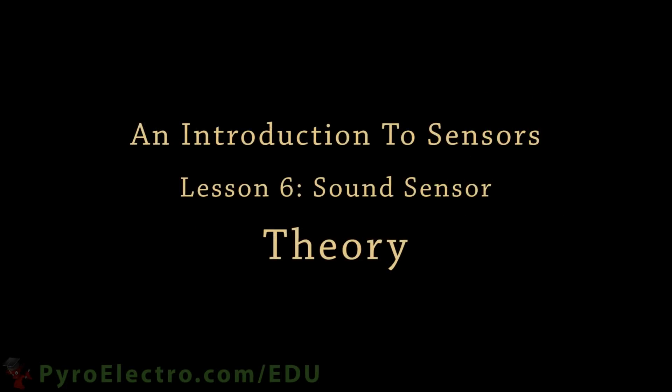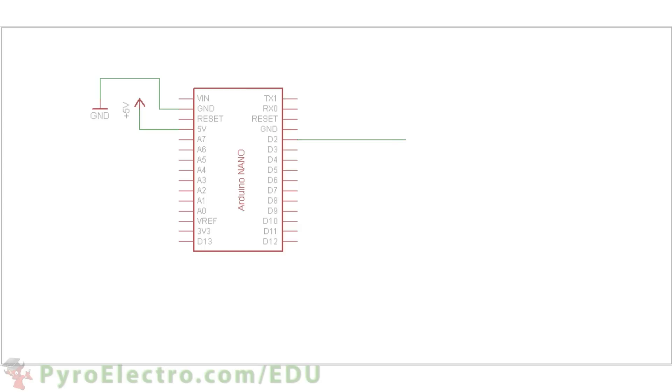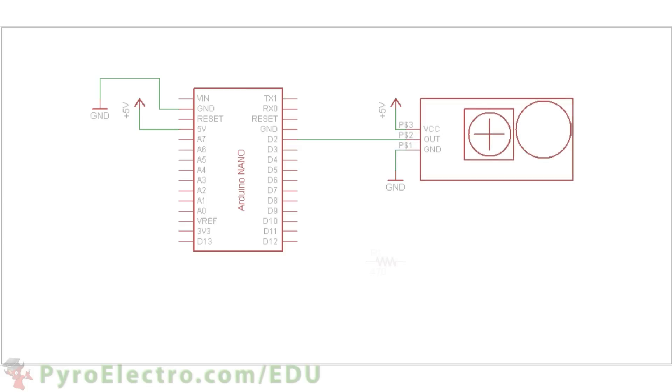The hardware schematic for this lesson is rather simple because we are connecting two systems together and adding a single output LED. The schematic starts with the Arduino Nano and connects its plus 5V and ground lines to the breadboard's bus lines. Then we connect digital pin 2 to the output of the sound sensor. The sound sensor also connects to plus 5V and ground. And finally, digital pin 3 connects to a 470 ohm resistor and a red LED going to ground.